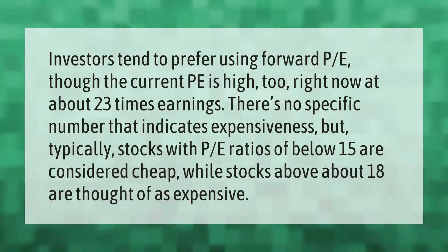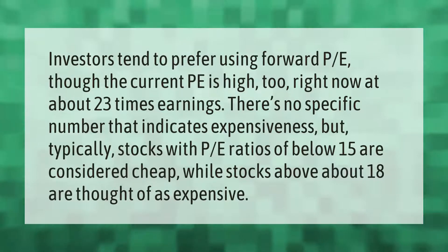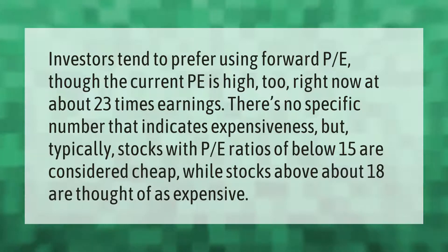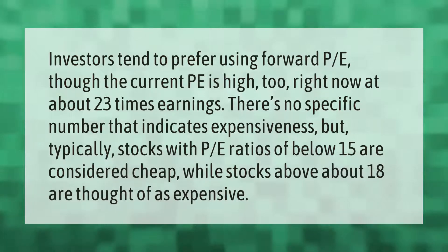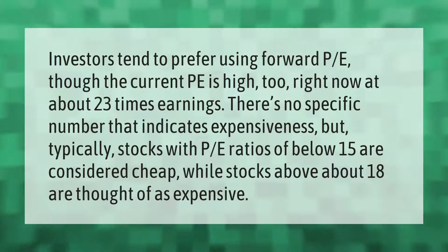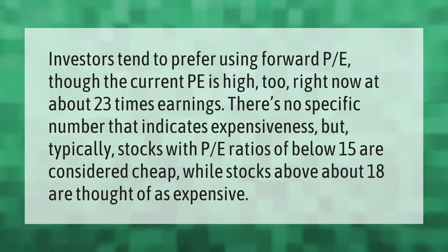Right now, the current P/E is at about 23 times earnings. There's no specific number that indicates expensiveness, but typically stocks with P/E ratios below 15 are considered cheap, while stocks above about 18 are thought of as expensive.